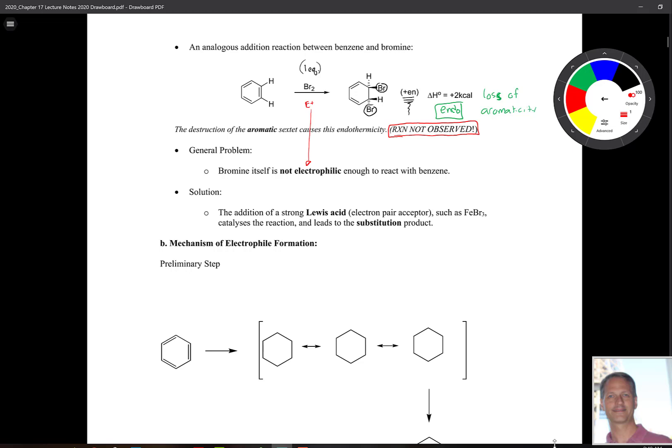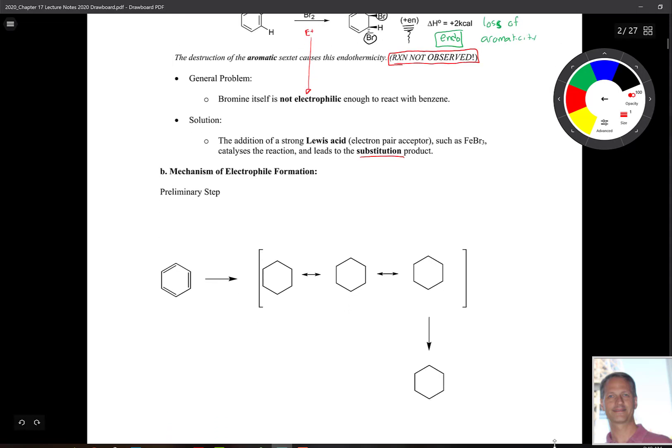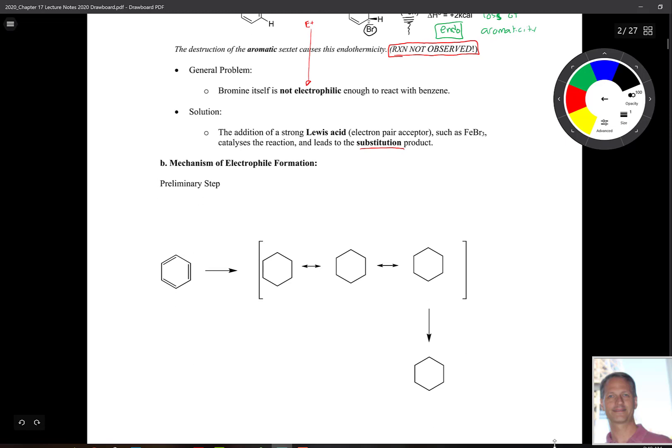The solution to this problem is to add a Lewis acid, an electron pair acceptor. We could use FeBr3, the most common one that we use with bromination, to catalyze the reaction. And this leads to the substitution product. Let's take a look at the preliminary step of this thing.